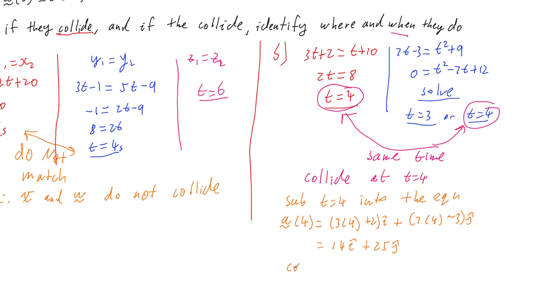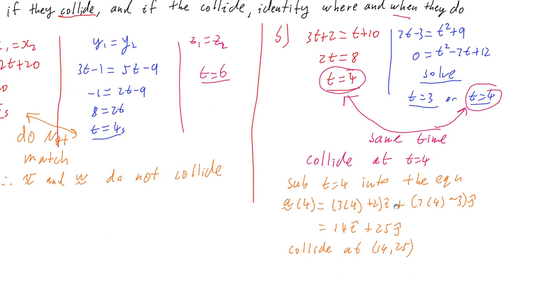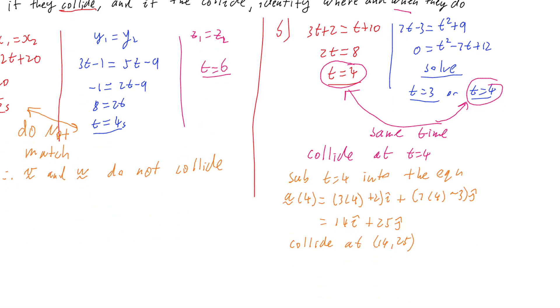So that means that they collide at x equals 14 and y equals 25. And we could confirm that also by substituting t equals 4 into my second vector and seeing what I get. But I do get 14i and 25j.